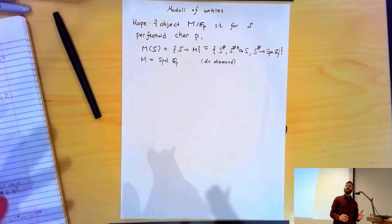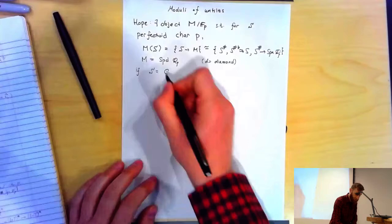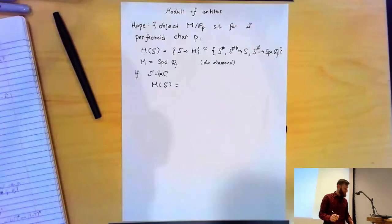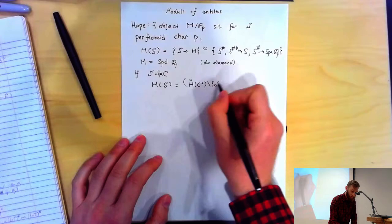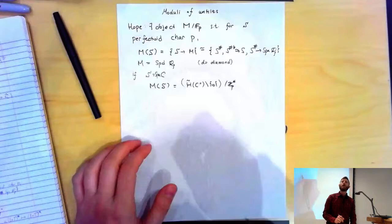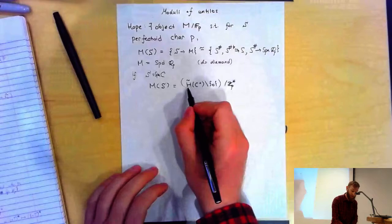We can say what this object is in the case of a perfectoid field of characteristic P. When S = Spa C, we already know what M(S) is — we have lots of parametrizations. One of them: take H̃(C°), remove a point, then mod out by Z_p×. This parametrizes untilts of C. So M should be something like the quotient of H̃ by Z_p×. And H̃ is something like a perfectoid space — once I remove zero, it becomes one.